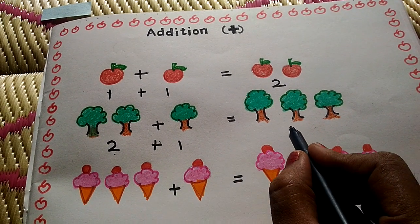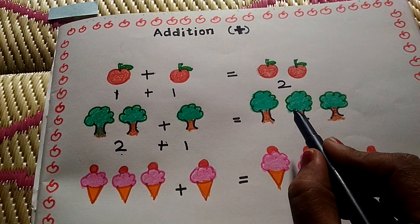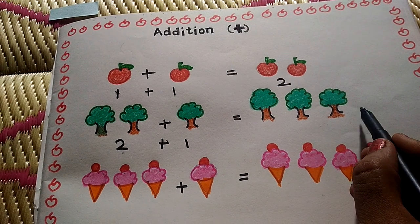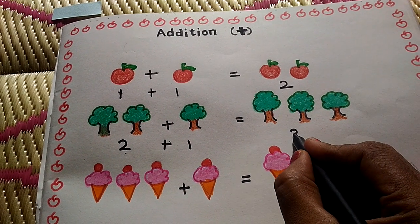Equal to. How many trees here? Count it. One, two, three. Answer is three.